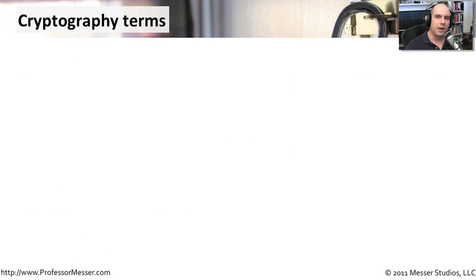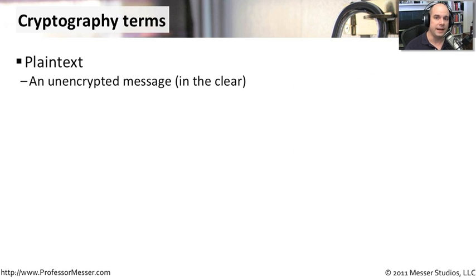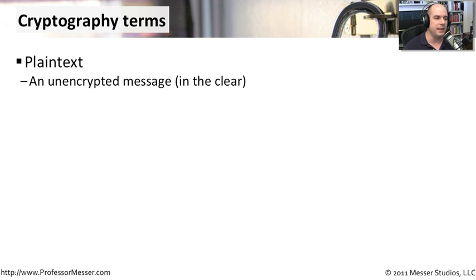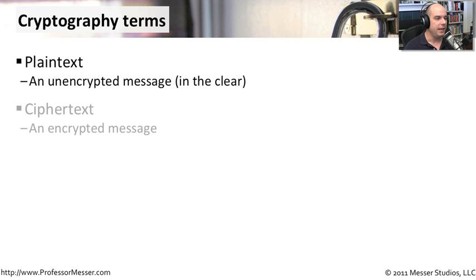There are a number of common terms you'll need to know about cryptography. The first is plain text. Before you encrypt anything, it is plain text — sometimes called 'in the clear.' If we were to send this information out over the network, anyone would be able to read it. We haven't done any type of hiding or encrypting of this message. Once we do encrypt the information, it becomes ciphertext.